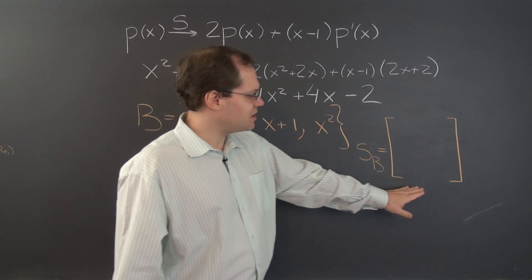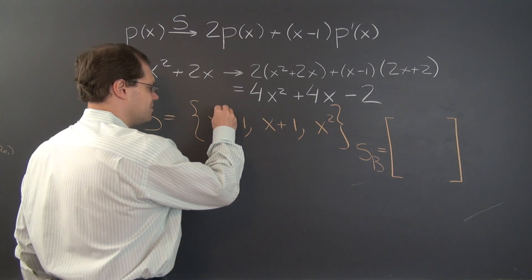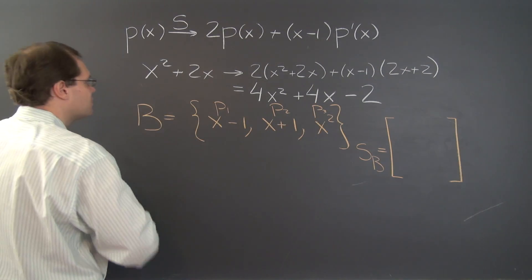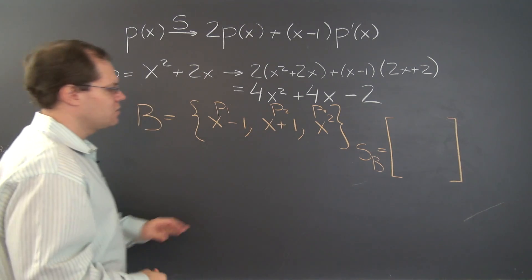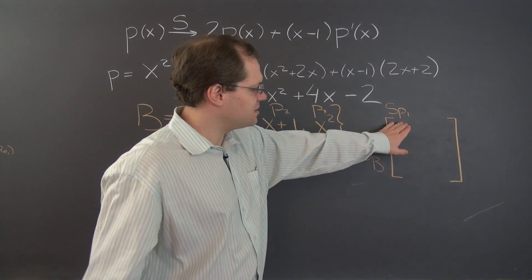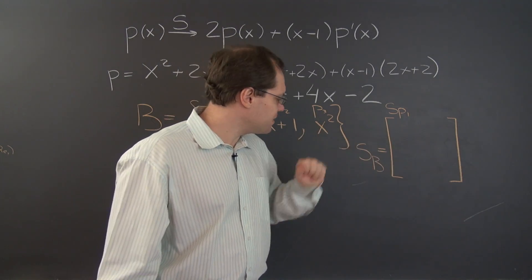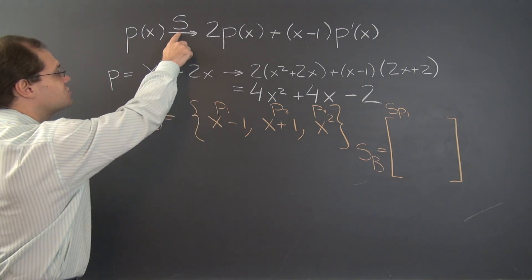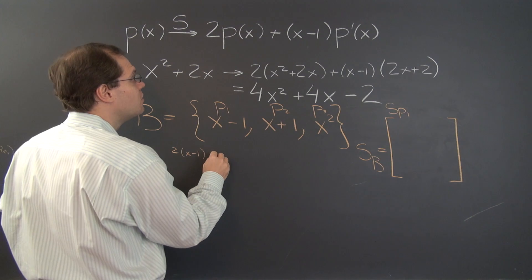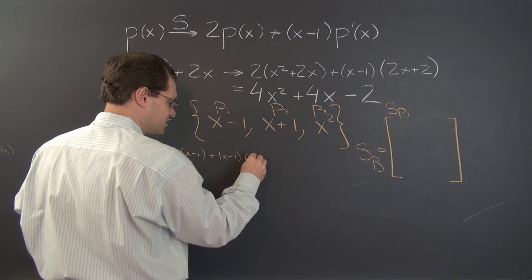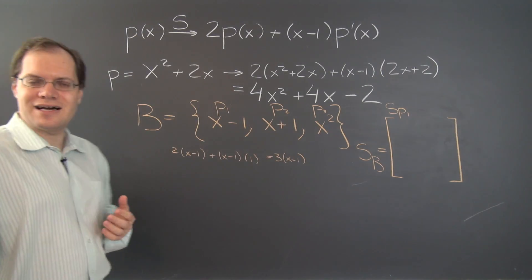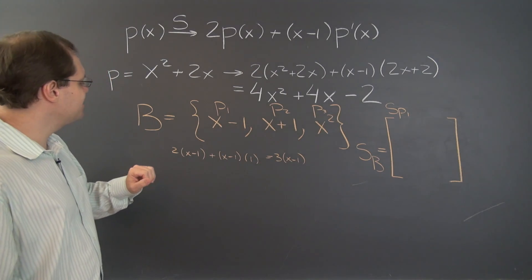And here we go. The first column will correspond to the first element. So let's call this P1, P2, and this will be P3, and this polynomial we'll call P. So the first column will have S of P1 in it. More specifically, the coefficients of S of P1 with respect to the same basis. So we have to compute this transformation applied to this vector. So it'll be twice itself plus x minus 1 times its derivative. And the answer is 3 times x minus 1. Look at that, we found an eigenfunction of this transformation, 3 times the original function.